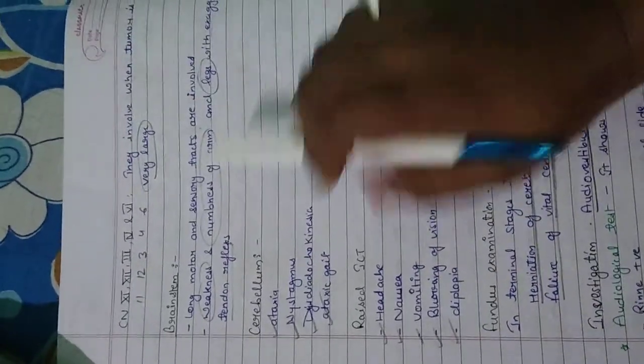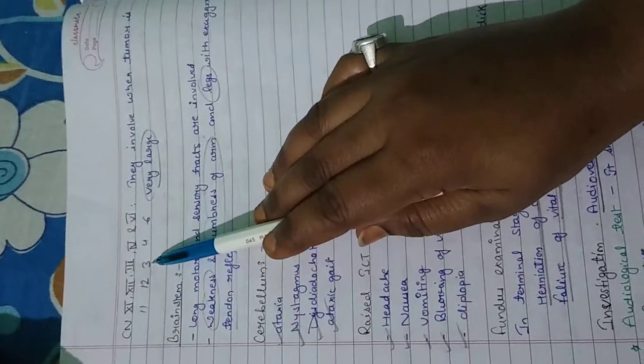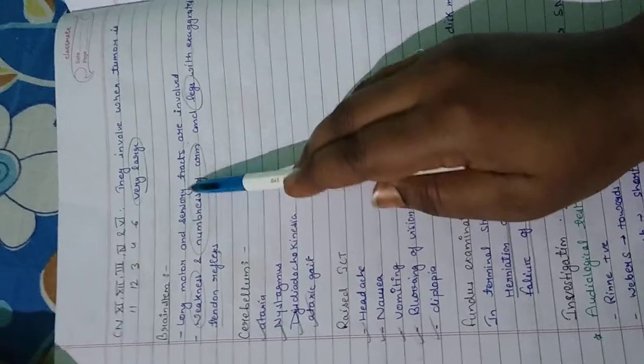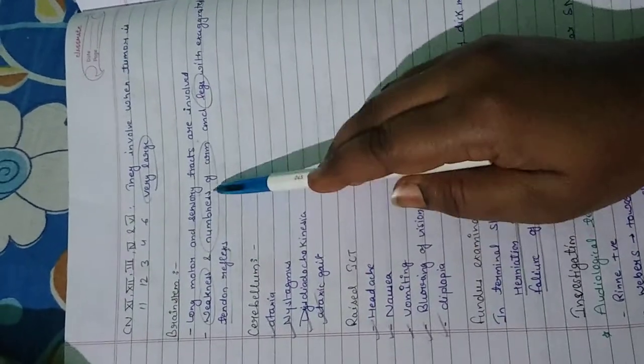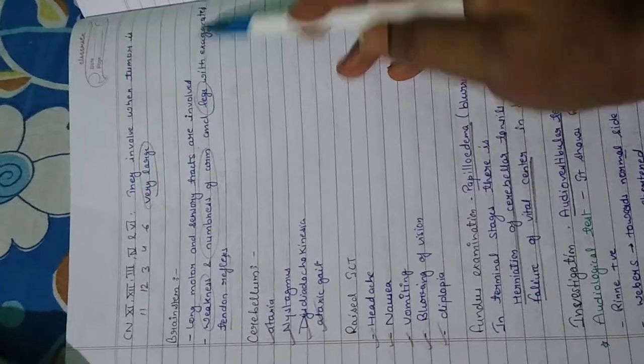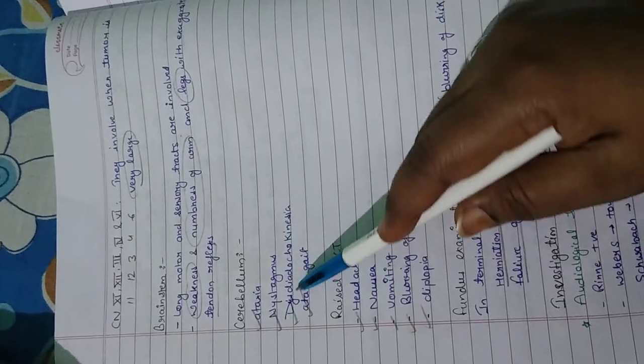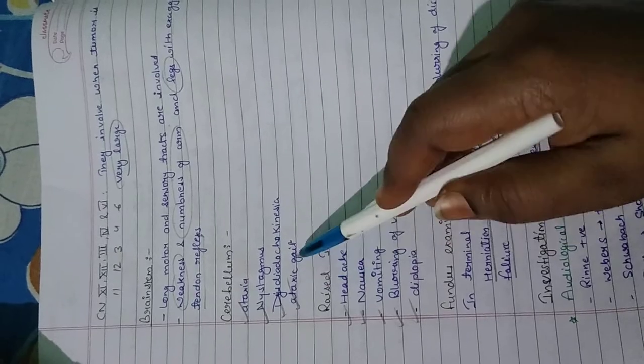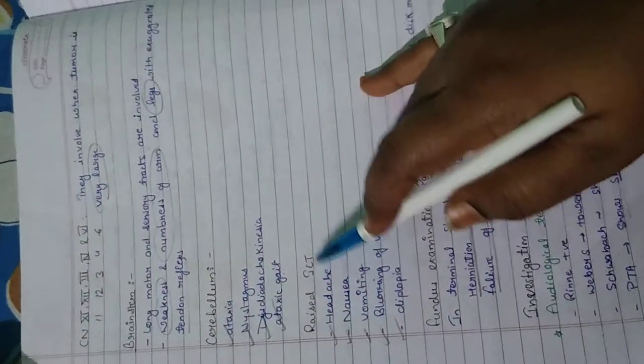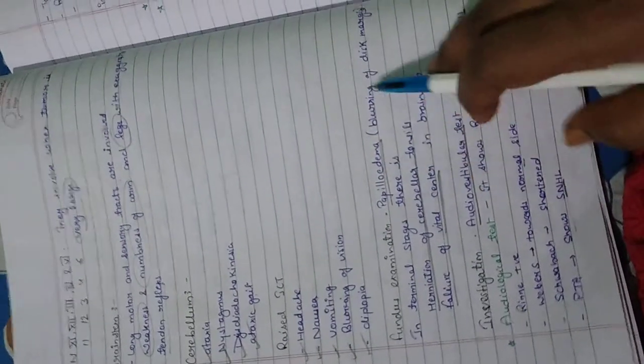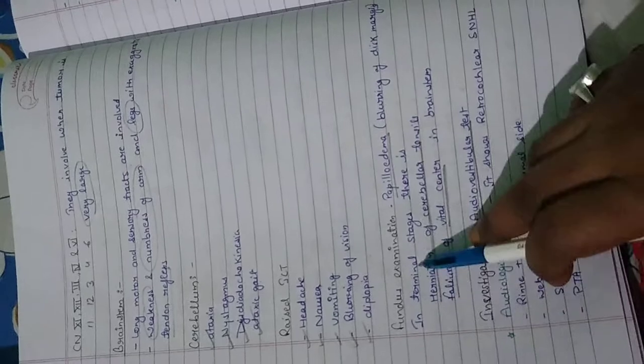If tumor is very large, it will involve all these nerves and brainstem. Long motor and sensory tracts are involved: weakness and numbness of arm and leg with exaggerated tendon reflexes.